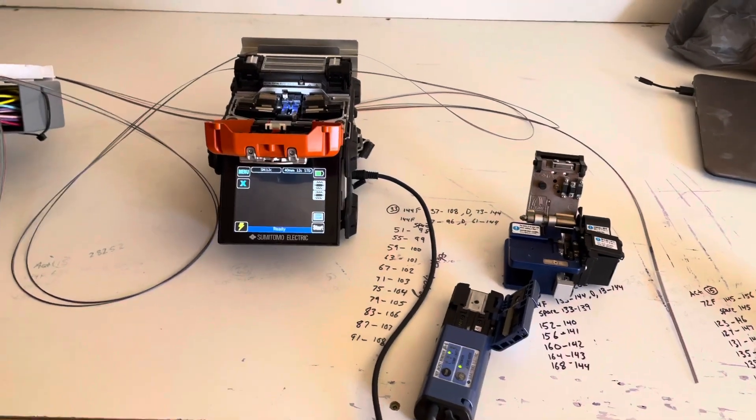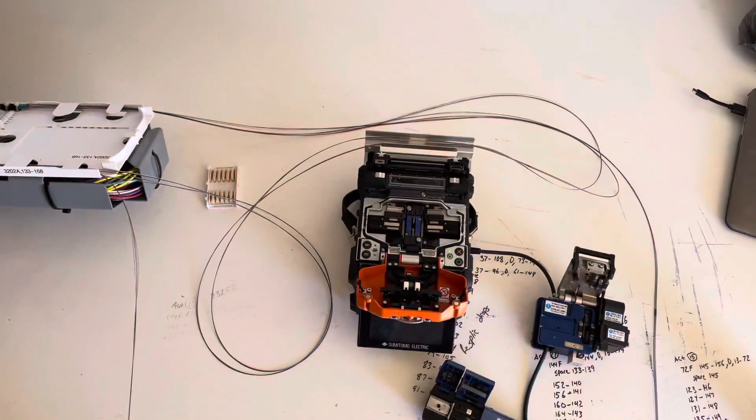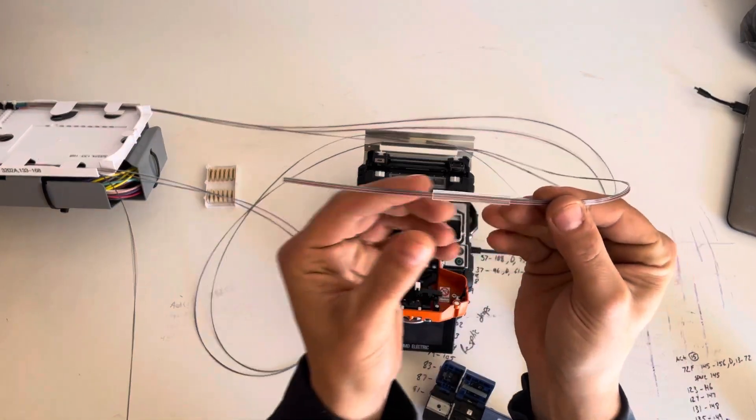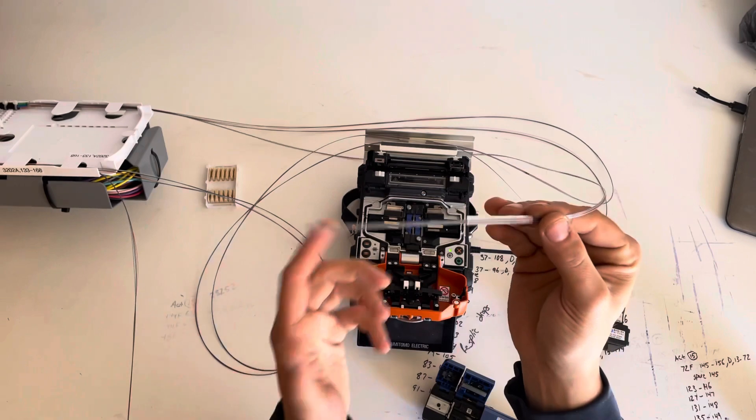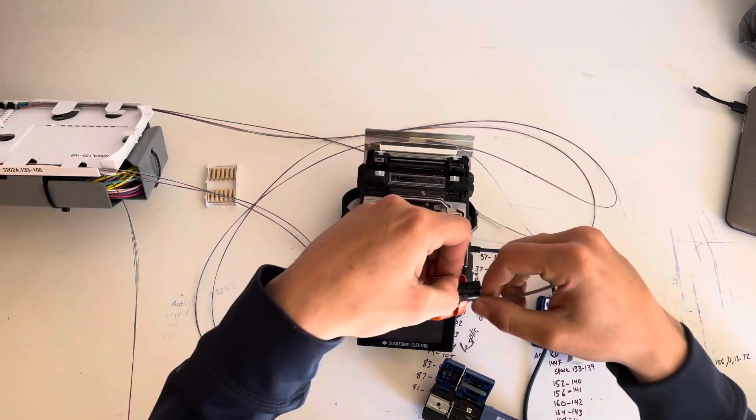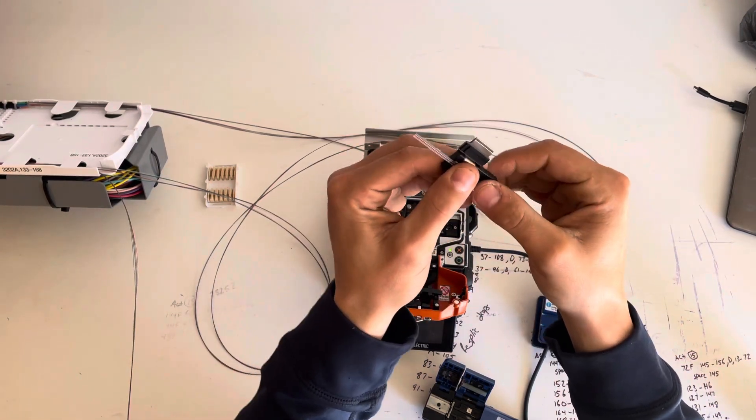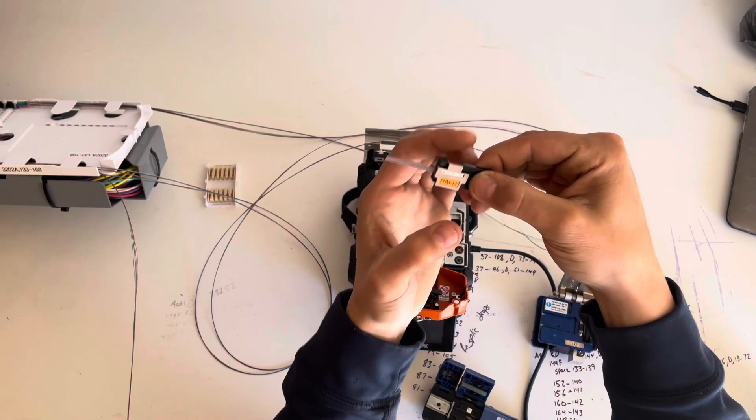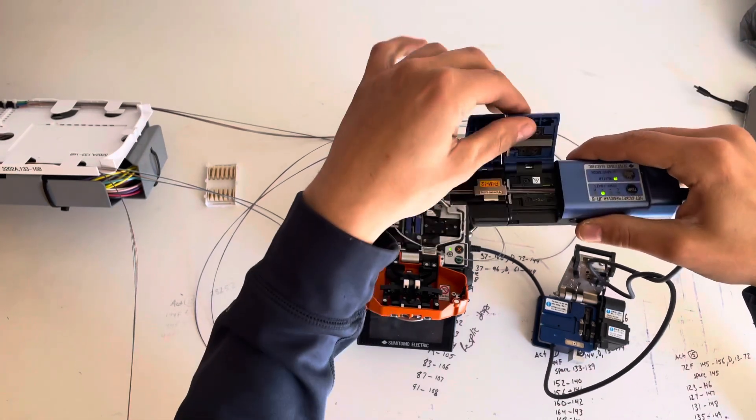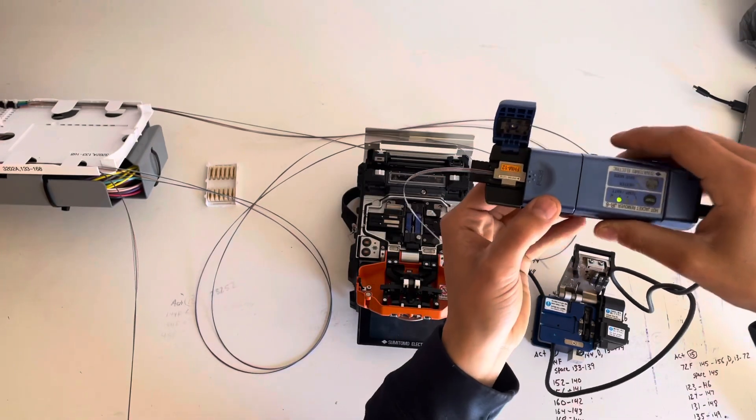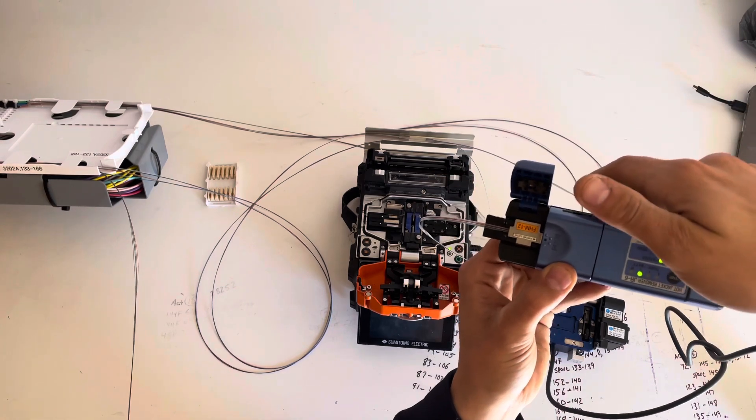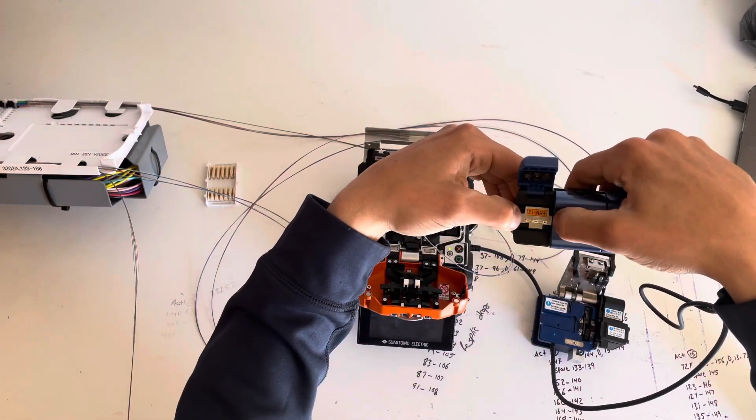Before you splice, you're going to want to have heat shrink on there. Make sure your heat shrink is on before you splice. Slide that down. We're running blue up. You want to put it an inch to inch and a quarter out, the exact amount to fit in there. Your heat stripper will indicate with the heater once it's solid, you can go ahead and strip it. Firm grip right there.